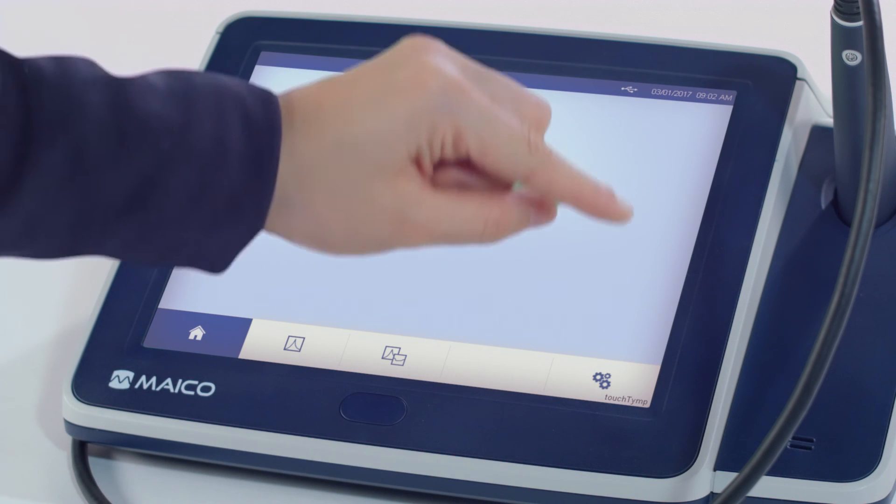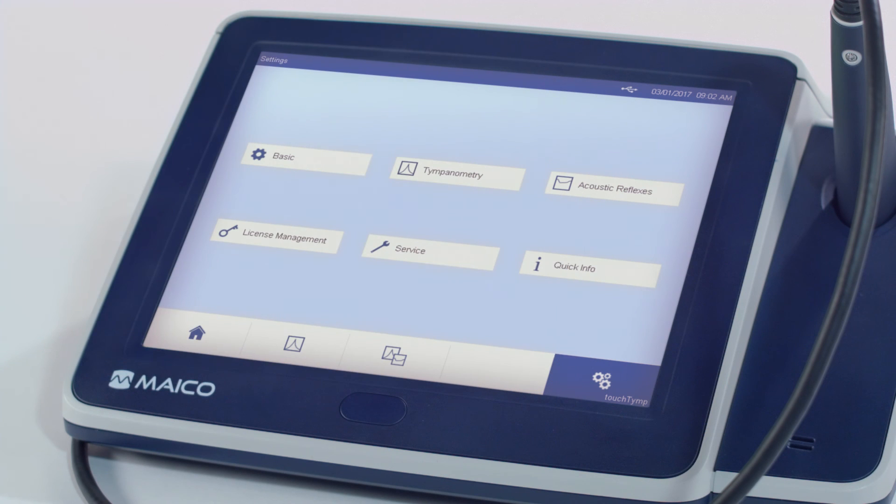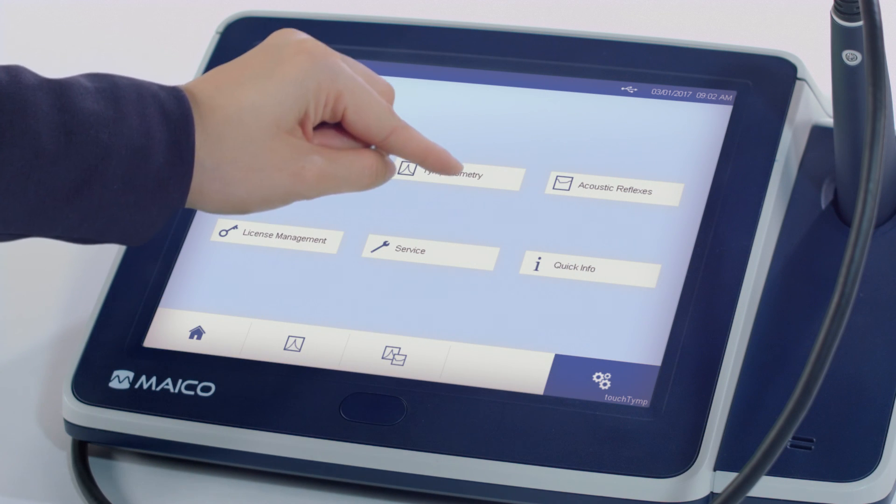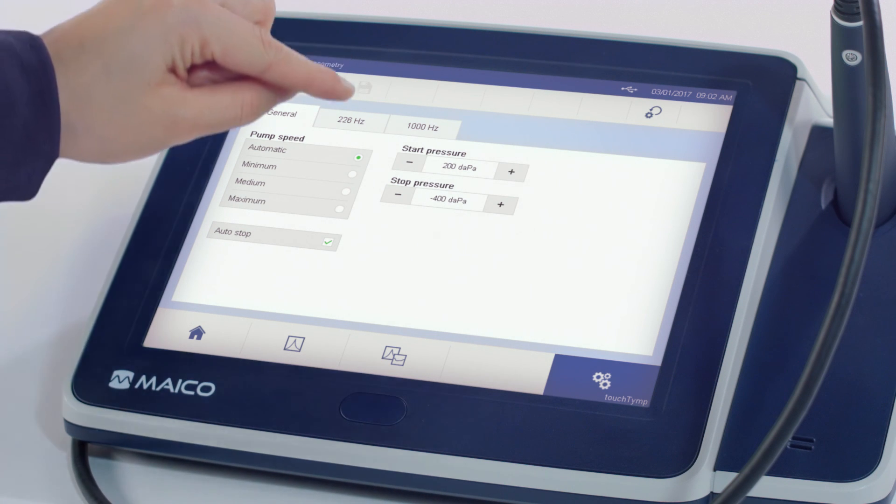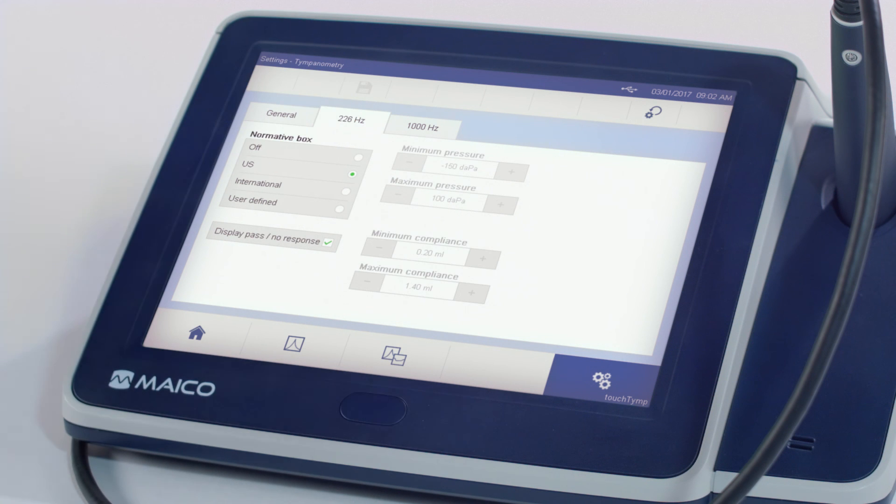The TouchTemp has a variety of custom settings to modify the standard protocols within the device. Some examples include displaying a normative box for the tympanometry results or a pass, no response indicator upon completion of the test.